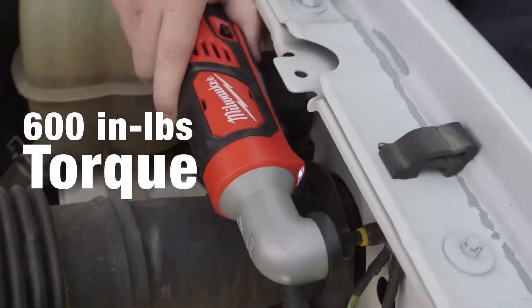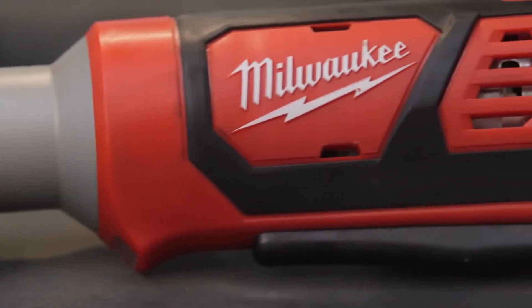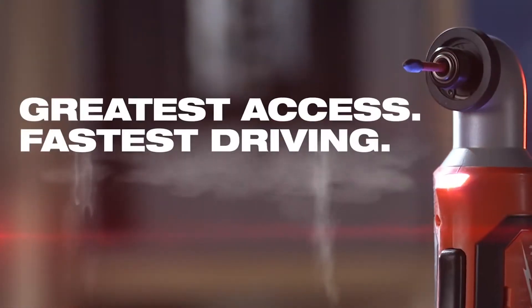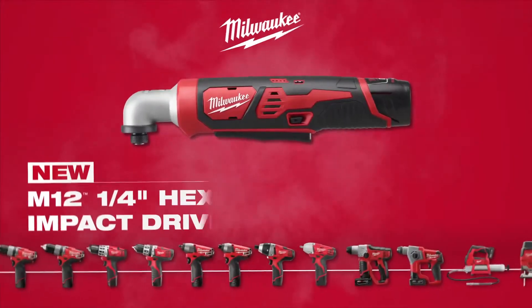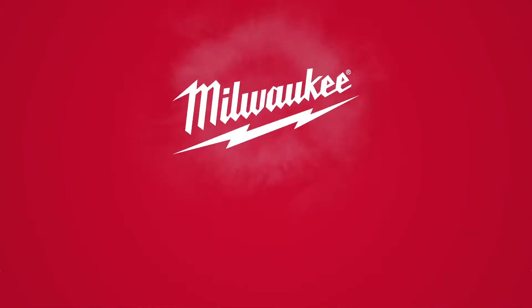Delivering 600 inch pounds of torque, the M12 quarter-inch hex right-angle impact driver outperforms other impact drivers in its class. The M12 quarter-inch hex right-angle impact driver from Milwaukee.